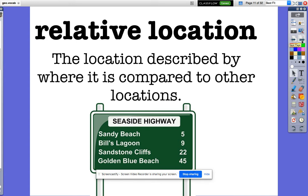When you describe a place where it is compared to other locations. So you can think about this question: What is the relative location of your house? My house is one mile south of Triangle Brick.